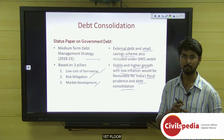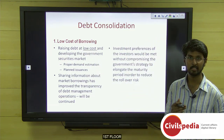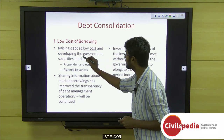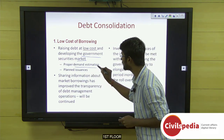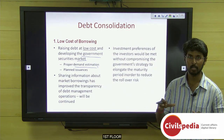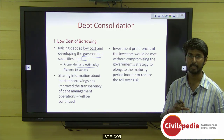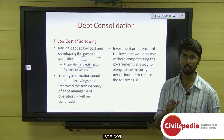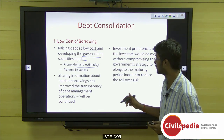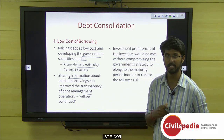On the first pillar — low cost of borrowing — the government intends to borrow at low cost by developing the proper government securities (GSEC) market through accurately estimating demand. The government has already introduced half-yearly demand estimation. It has also brought transparency by sharing information about market borrowings, improving the transparency of debt management operations.